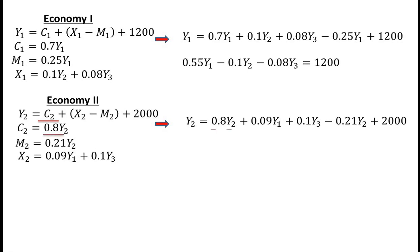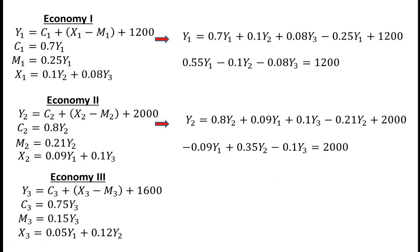After simplification we get minus 0.09Y1 plus 0.35Y2 plus 0.1Y3 is equal to 2000. In economy 3, after substituting the values of C1, M1, and X1 in national income equation Y3, we get the equation...